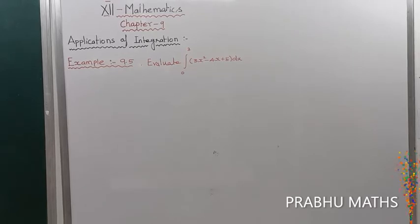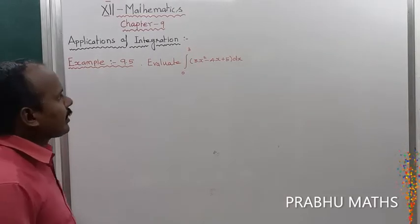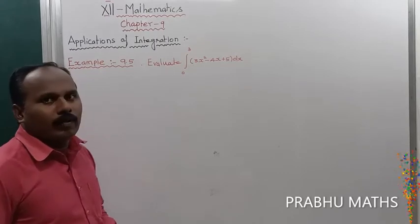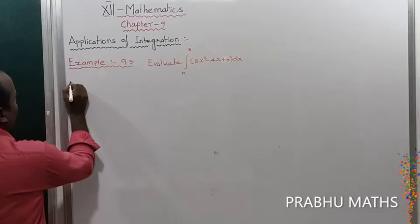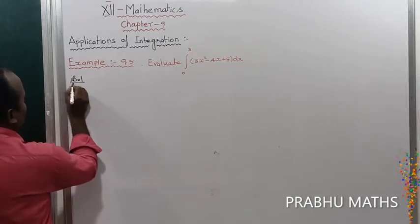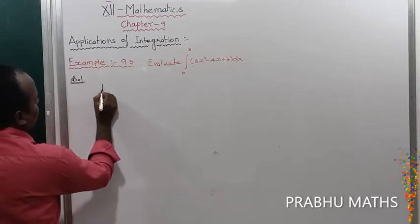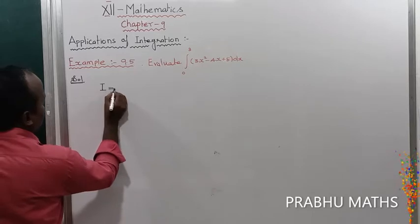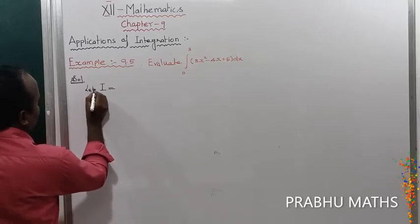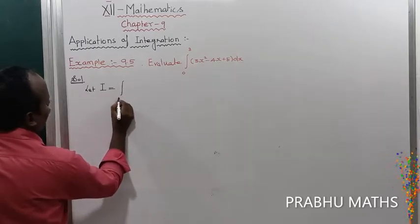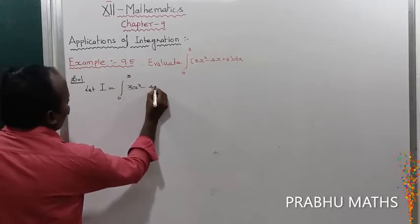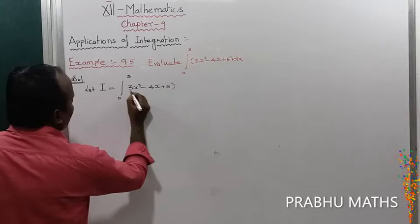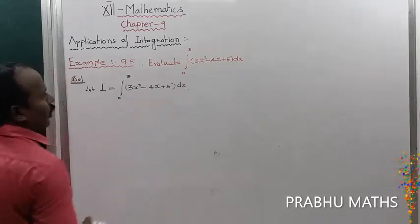Example 9.5: Evaluate the integral from 0 to 3 of (3x² - 4x + 5) dx. First of all, the given integration — let us consider i is equal to the integral from 0 to 3 of (3x² - 4x + 5) dx.